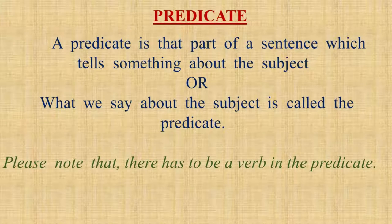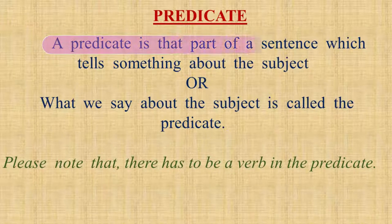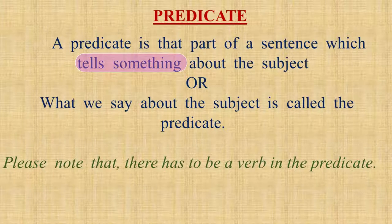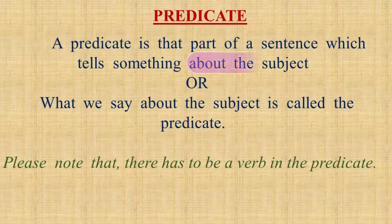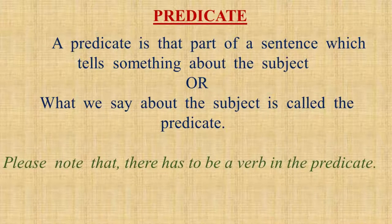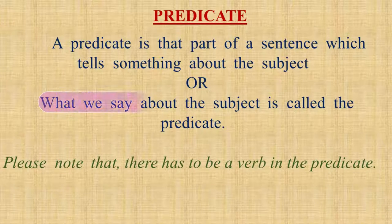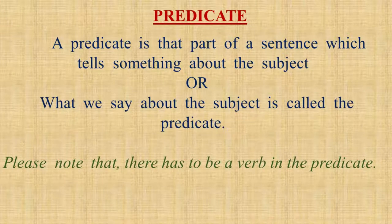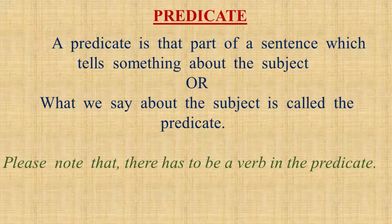Please repeat after me. A predicate is that part of a sentence which tells something about the subject. Or, you can understand in a simpler way that what we say about the subject is called the predicate. The predicate part has verb as its necessary component. When we know this, it becomes easier to distinguish the subject and the predicate in the sentence.